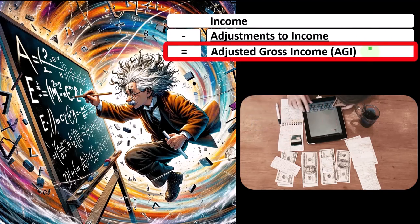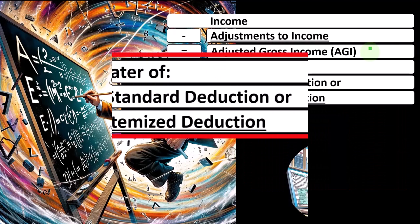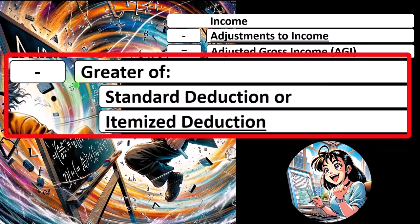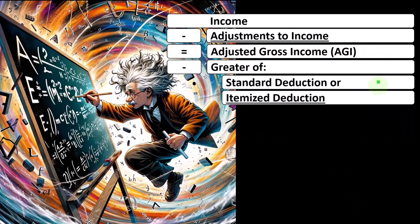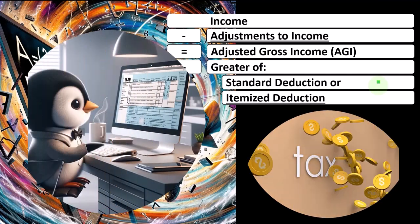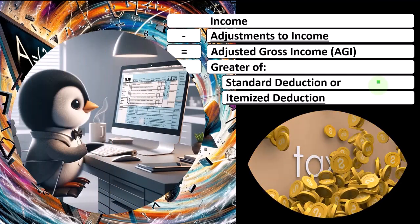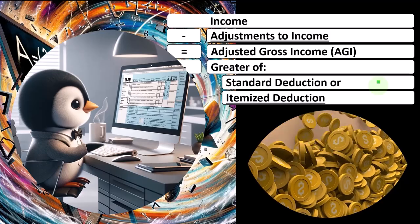So that's why that's a very important line item. And then we have the greater of two types of deductions, either the standard deduction or the itemized deduction. Now, this is an area a few years ago, there's been some back and forth to try to simplify the tax code and so on. And the idea of that would be...